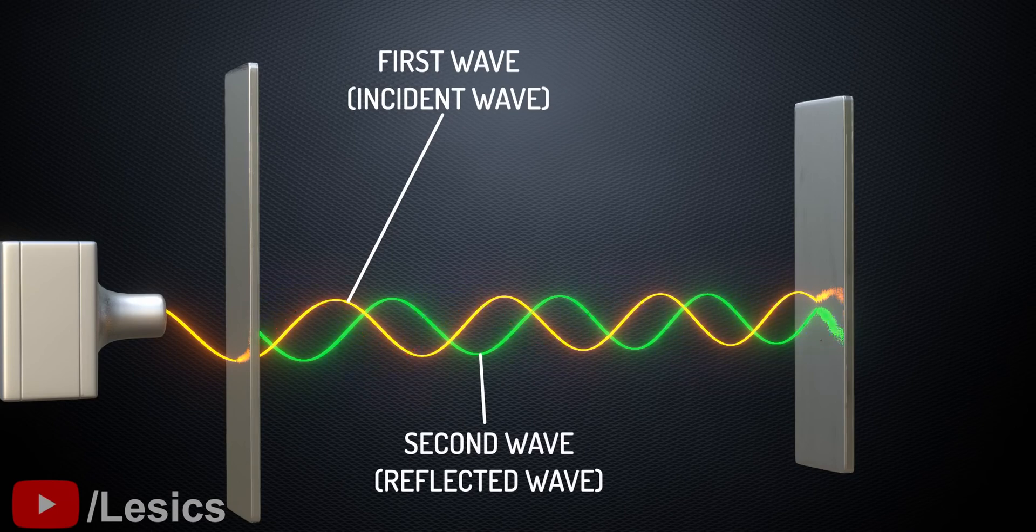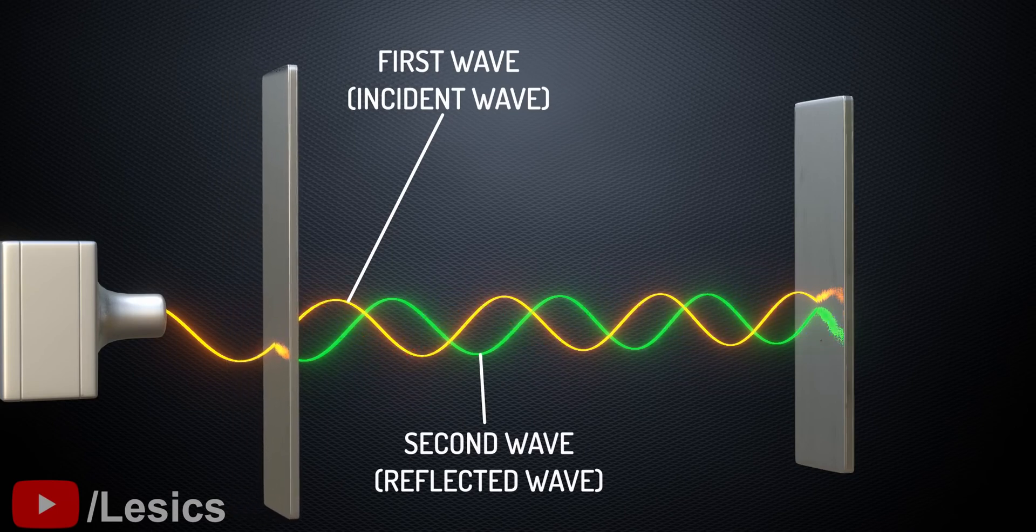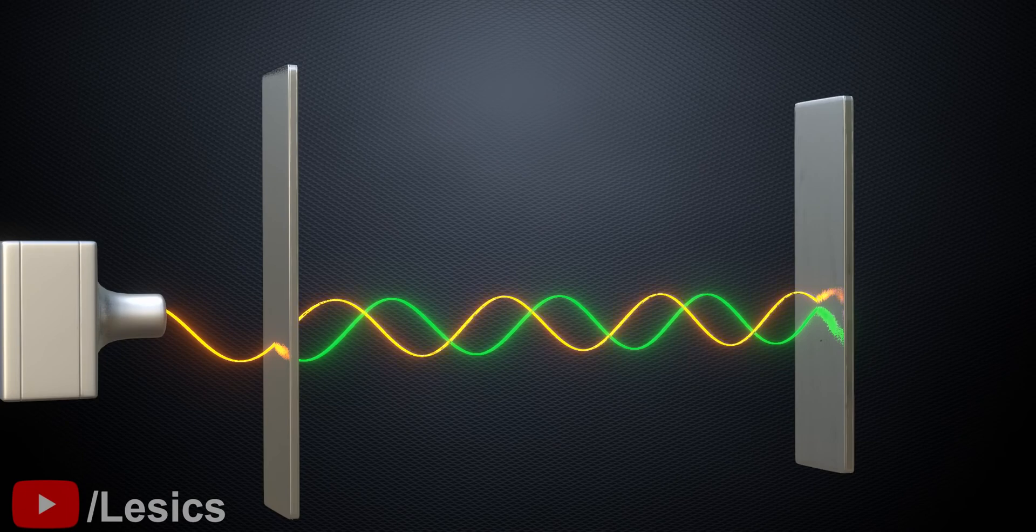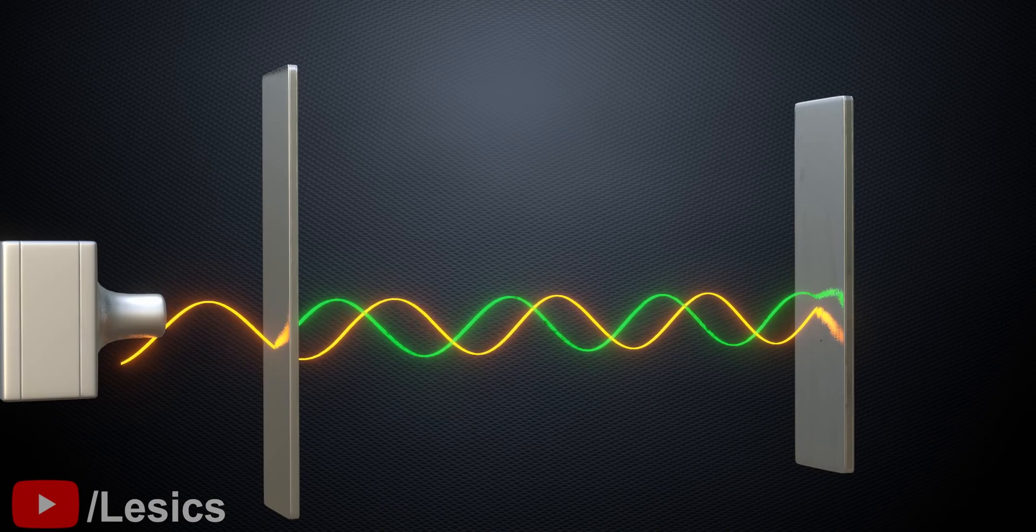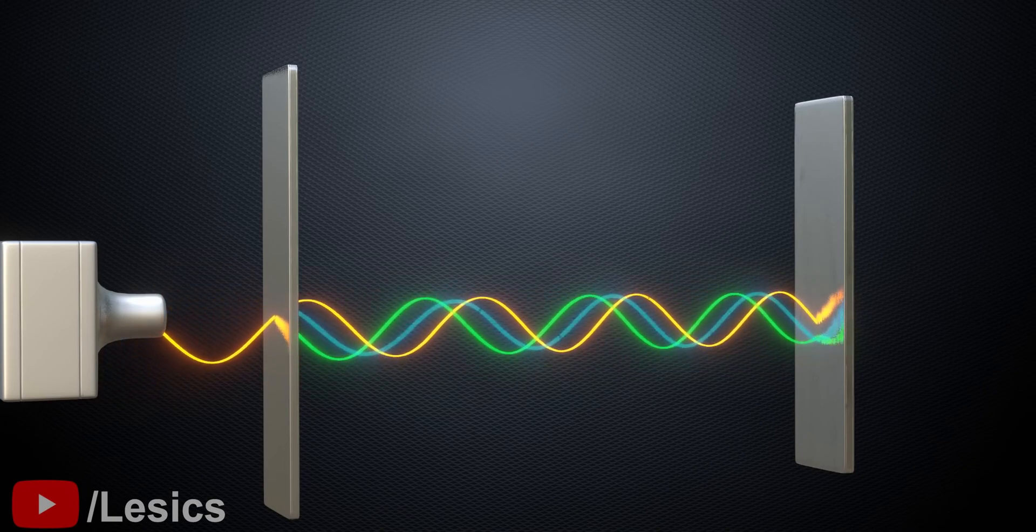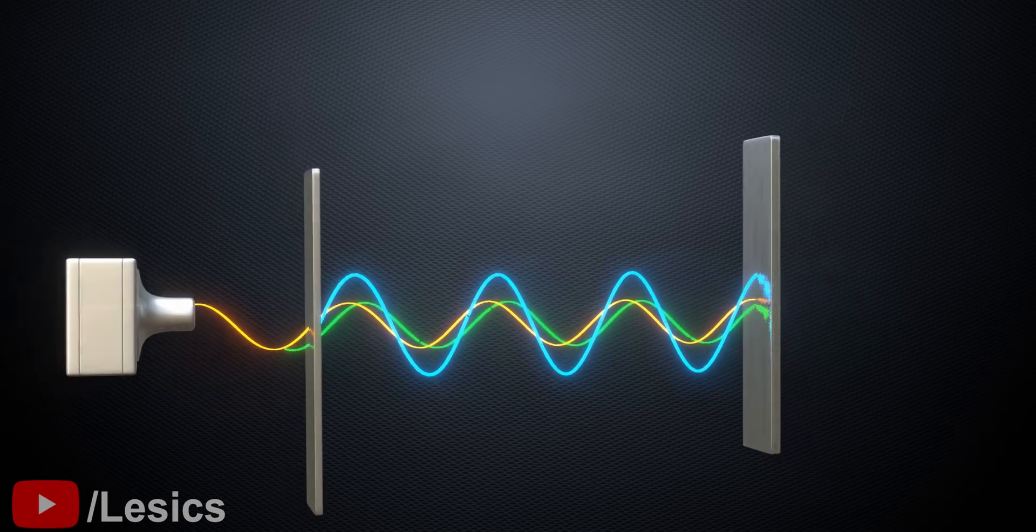However, if you keep the second reflector at the intersection point of the first and second waves, the third wave produced after the reflection will be the same as the first wave. This is a clever arrangement. When you arrange the second reflector this way, we will see only two waves traveling in opposite directions instead of many reflected waves and chaos. If you find out the resultant of them, it will be a standing wave.